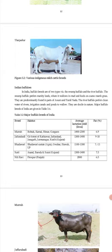The major buffalo breeds are Murrah, Jaffarabadi, Bhadawari, Surti, and Nili-Ravi. Murrah is found in Rohtak, Karnal, Hisar, and Gurgaon. Jaffarabadi is found in Gir forests of Kathiawar, Junagarh, and Kachchh of Gujarat. Bhadawari is from Agra, Gwalior, and Etawah in UP. Surti is from Anand, Baroda, and Surat in Gujarat. Nili-Ravi is from Ferozepur in Punjab.